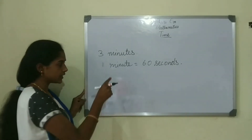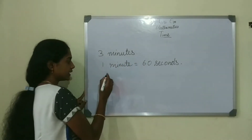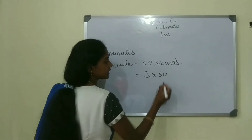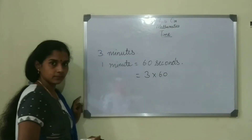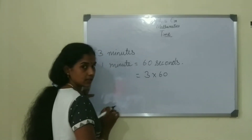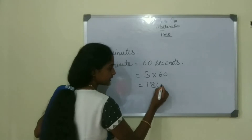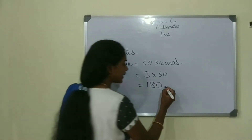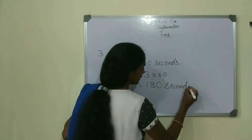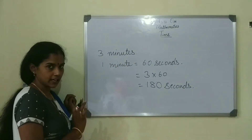1 minute has 60 seconds. So for 3 minutes, we do 3 into 60. 3 sixes are 18, write the 0. There are 180 seconds in 3 minutes.